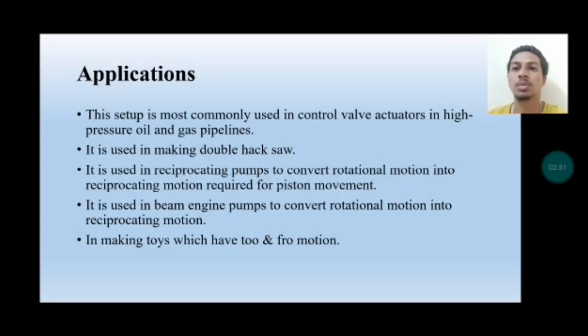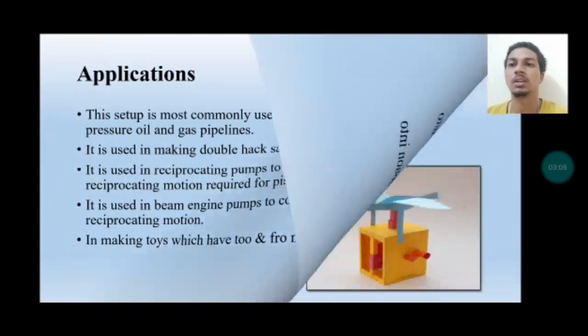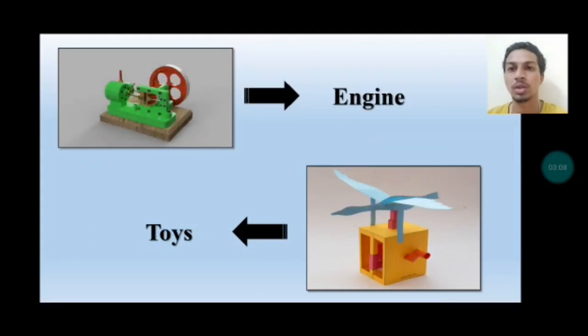Applications of the mechanism include: use in wall extruders for high-pressure gas pipelines, making double hex saws, manufacturing toys with to-and-fro motion, and beam engine pumps to convert rotational motion into reciprocating motion. There are many applications of the Scotch Yoke Mechanism.